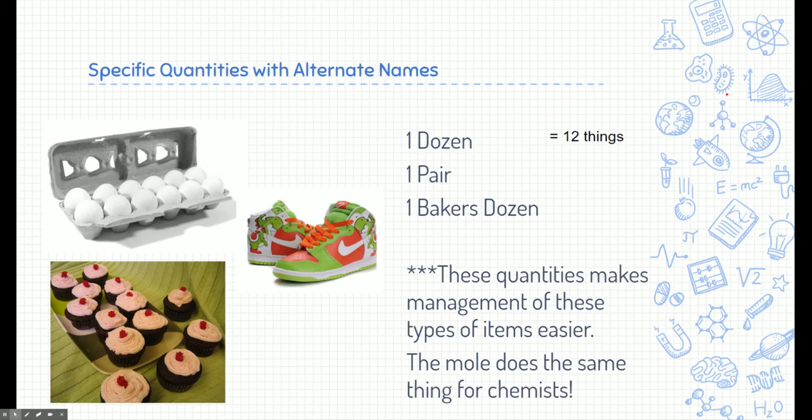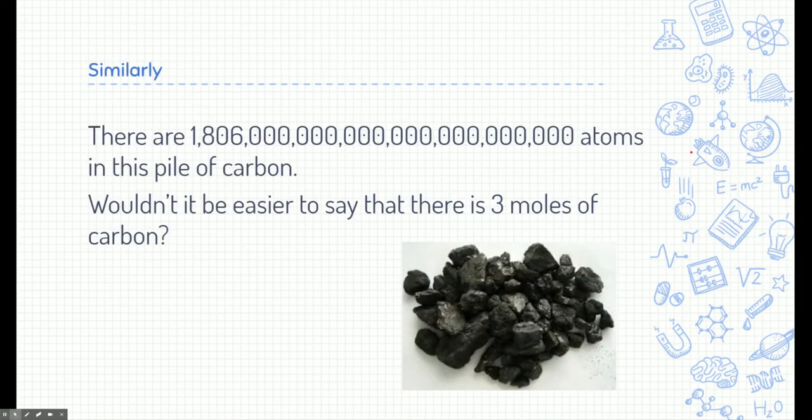One pair is another example of that. A pair of shoes is two shoes, or you can say a pair of pants. We use a pair to represent two things in a lot of different instances. Same thing. A baker's dozen is 13 things. These are just different units that we've invented to make management of these types of things easier. And a mole does the exact same thing for a chemist. So if you take a look here, look at this pile of carbon. This is a pile of carbon and there's lots of atoms. In fact, there's like trillions of atoms in this pile of carbon. That's a big number and really hard to deal with for a chemist. It would be a lot easier if we would just say that there were three moles of carbon in here, which that's how much three moles would be. So that's the point of a mole and why we use moles in chemistry. It just simplifies quantities of things.